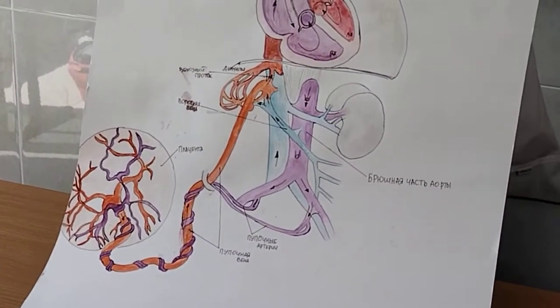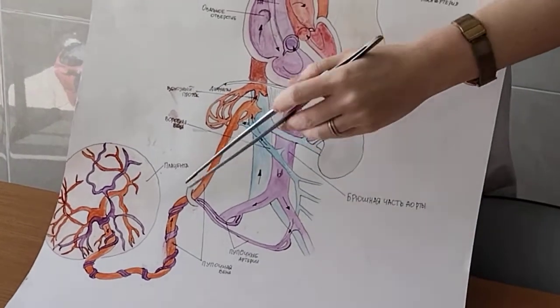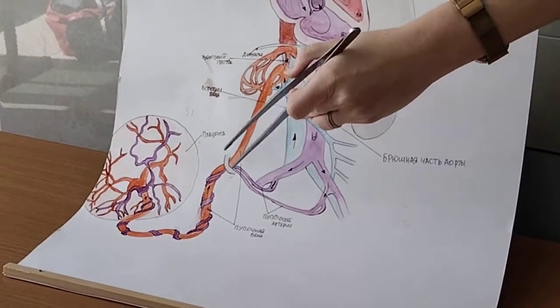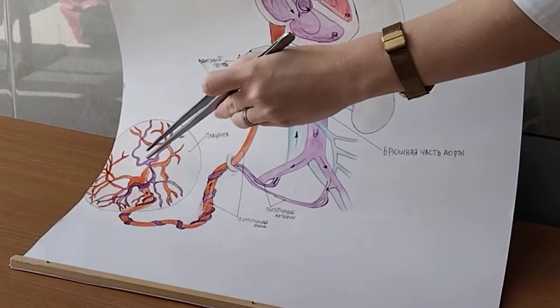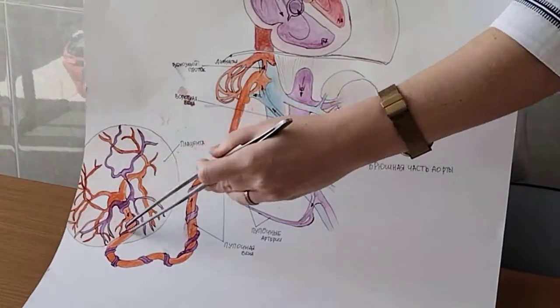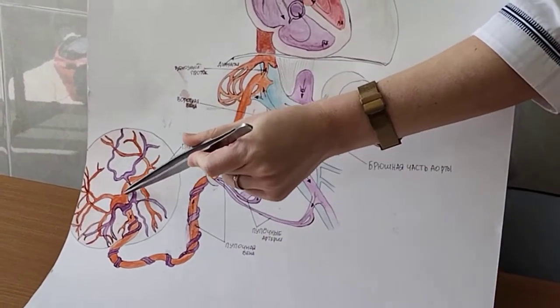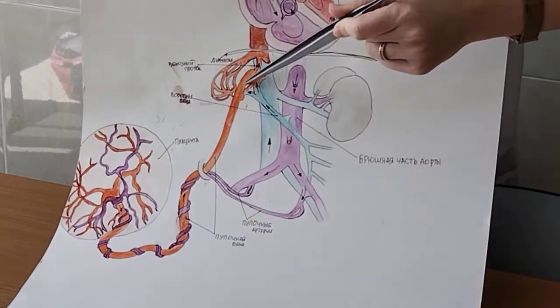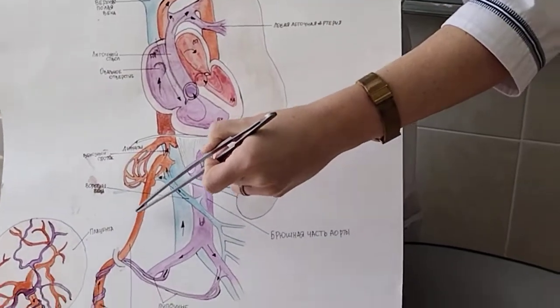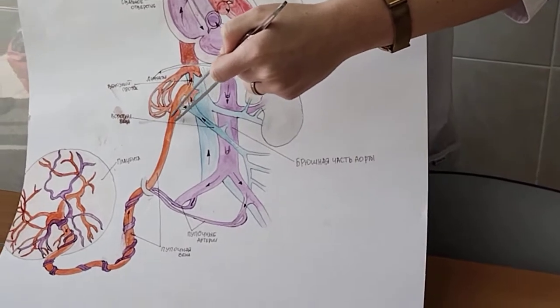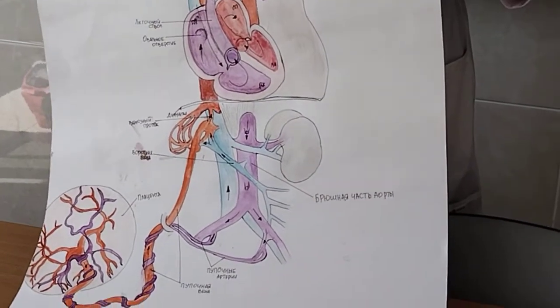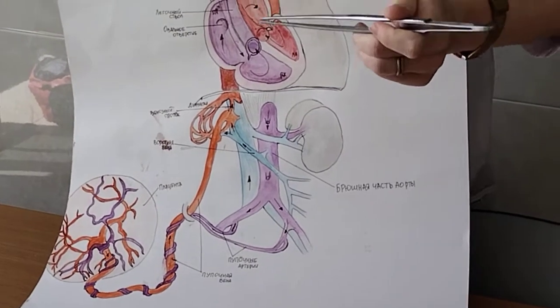They enter the umbilical cord. Okay, and they carry deoxygenated blood, these umbilical arteries, to the placenta. And in the placenta, gas exchange takes place. And oxygenated blood via the umbilical vein enters back to the fetus. And this umbilical vein reaches the liver and it is divided into two branches.